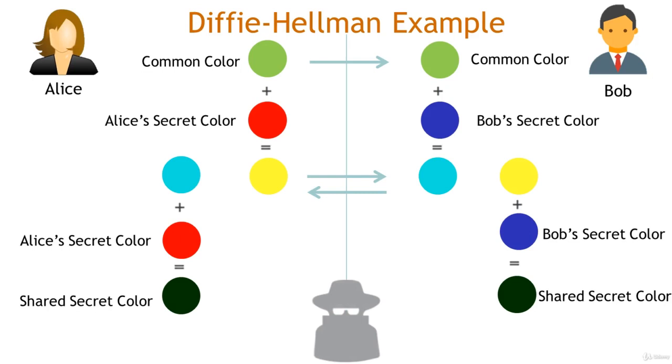Now, let's assume that a malicious person is watching all of the messages that Alice and Bob exchanged. What would he know? Well, he knows that they started with the color green, and he knows that they exchanged the colors cyan and yellow. He would not know either of the two secret colors that Alice and Bob selected, which are red and blue, or the common secret color of teal, because those were never sent over the insecure channel.